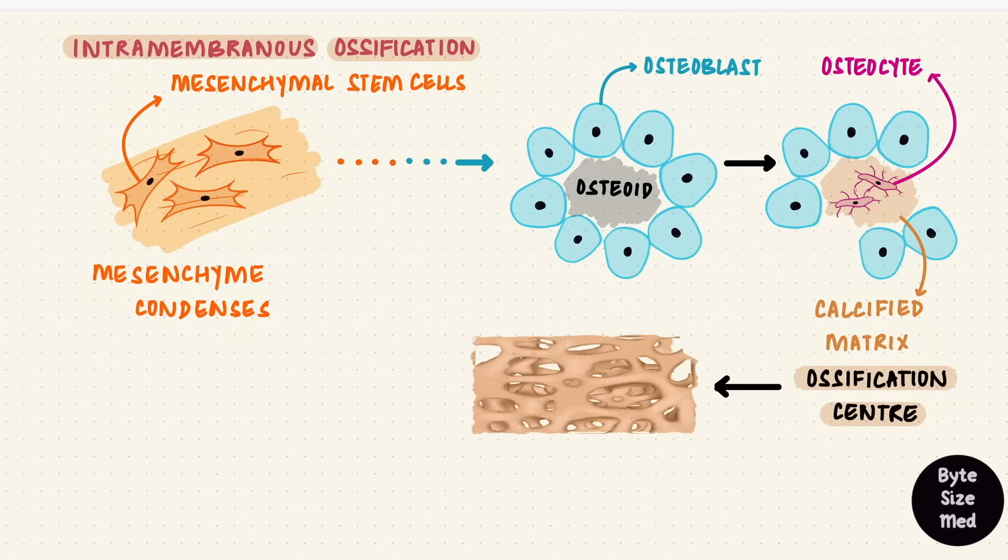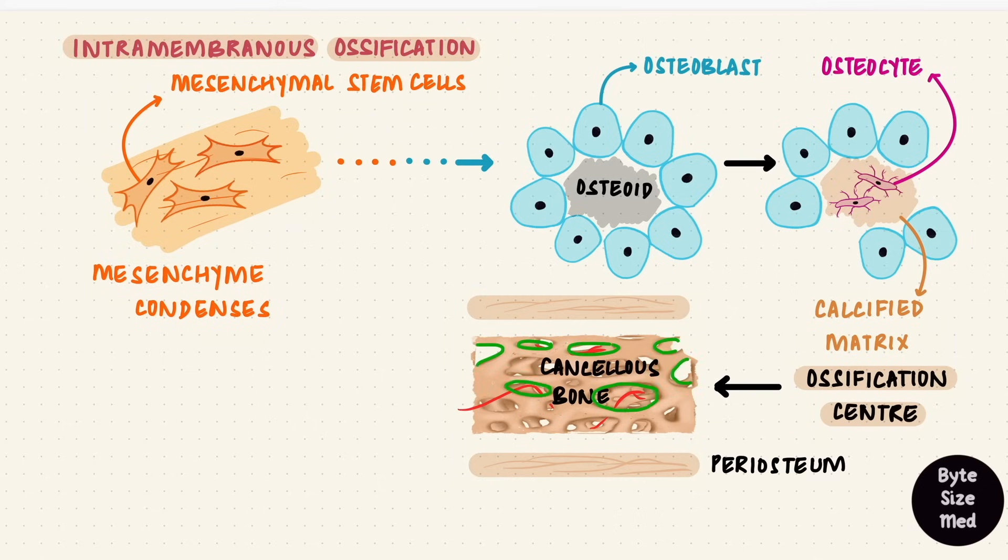The bone matrix organizes into rods and plates, forming the trabeculae of cancellous bone around blood vessels. Between the trabeculae is hematopoietic tissue. Here, mesenchymal cells become blood forming cells. This is marrow. The mesenchyme around that doesn't form bone forms the periosteum, and that lining the marrow cavities forms the endosteum.